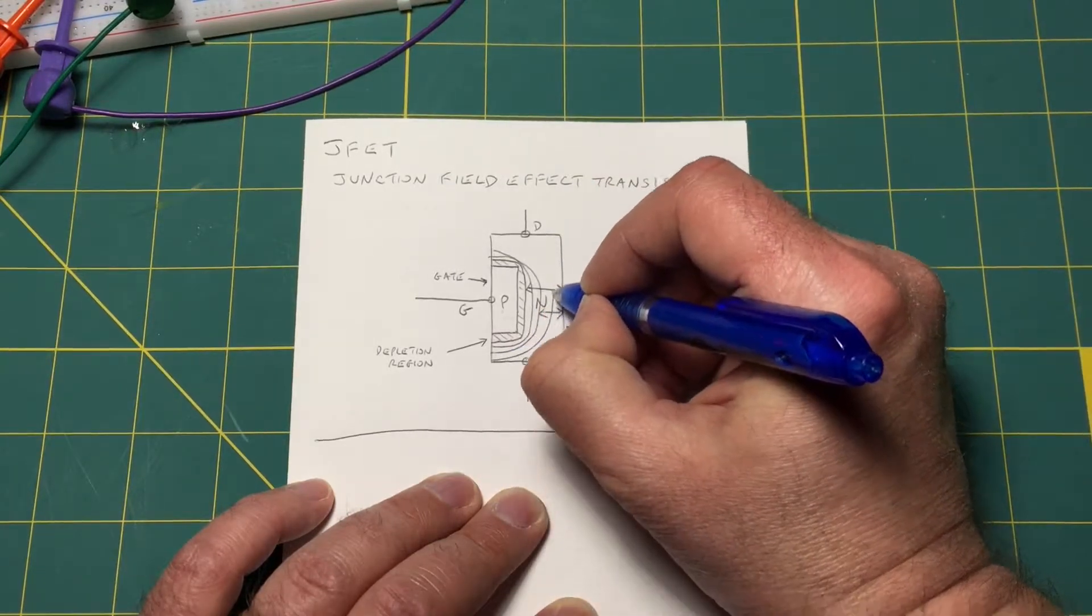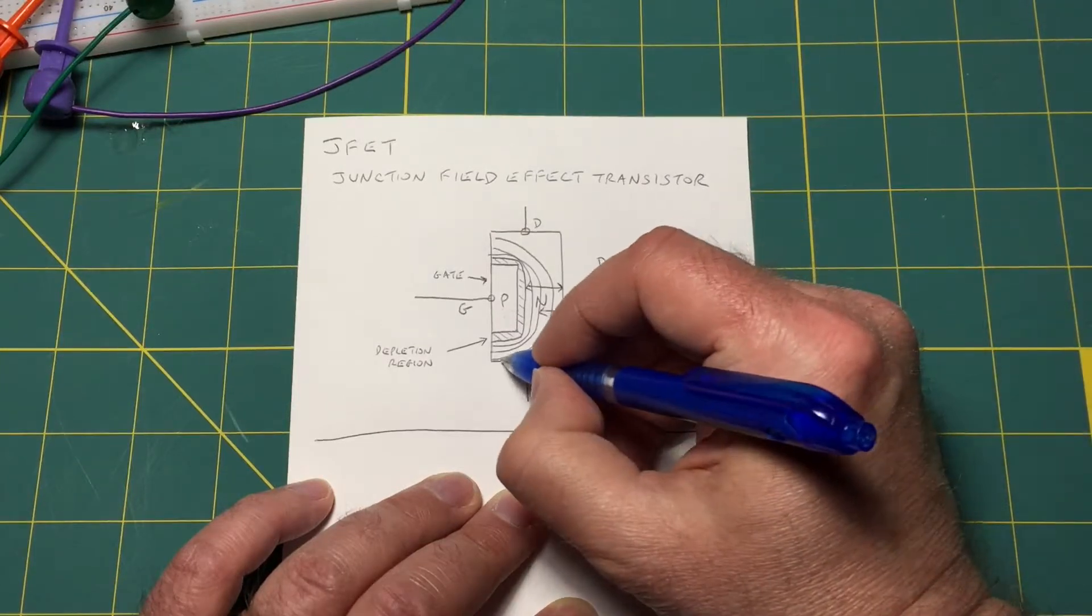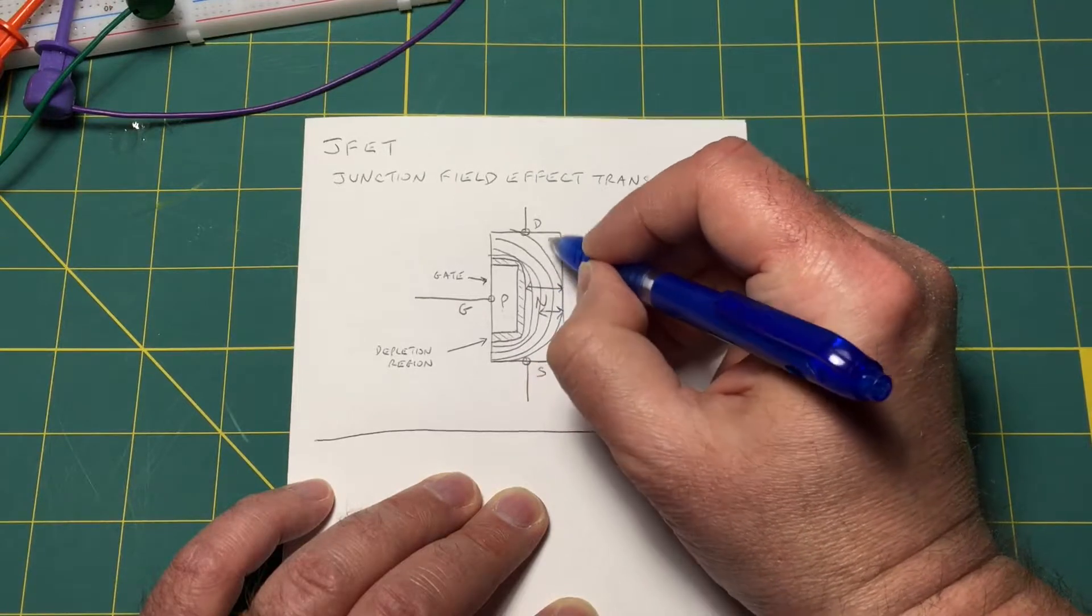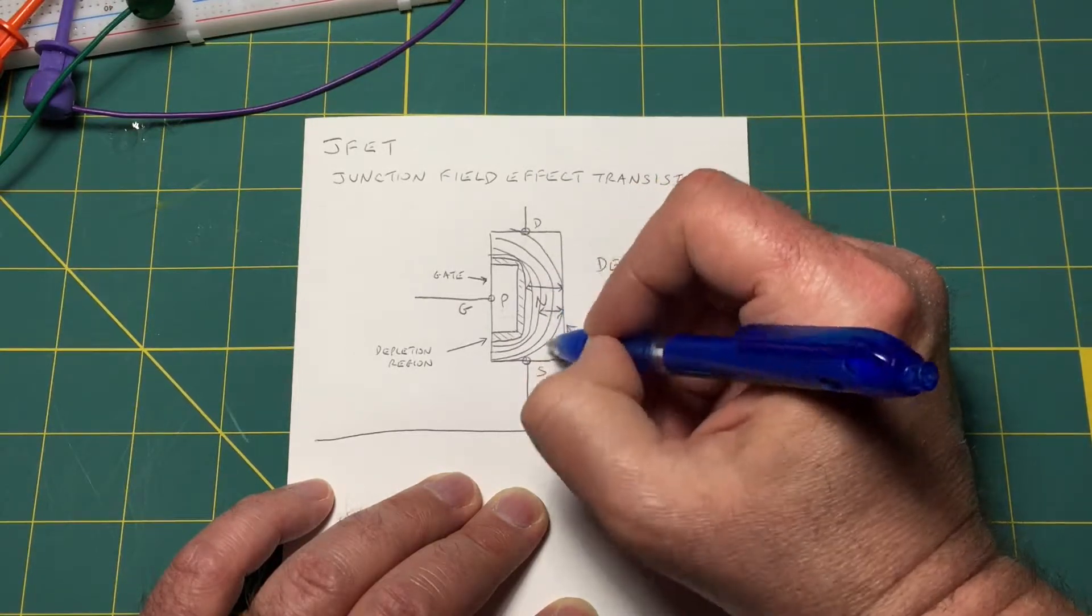And at some point called cut-off or pinch-off the depletion region will completely block the channel and you won't have any current flow at all.